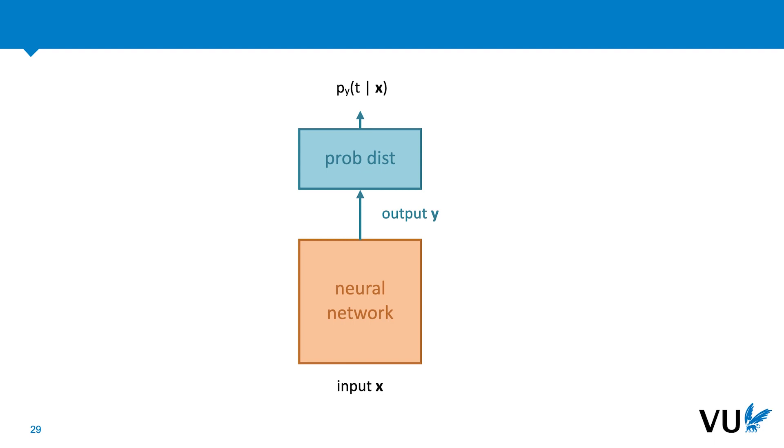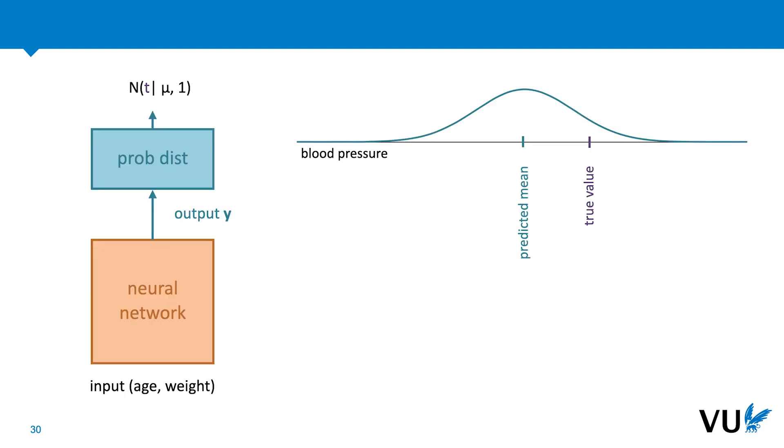To finish up, let's see what happens if we extend this to another distribution, the normal distribution. The normal distribution is a distribution on the number line, so this fits best to a regression problem. We give the network the age and the weight of a person, and our aim is to predict their blood pressure. However, instead of treating the output node as the predicted blood pressure directly, we treat it as the mean of a probability distribution on the space of all possible blood pressures. To keep things simple, we fix the variance to 1 and we predict only the mean. We can also give the neural network two outputs and have it predict both the mean and the variance, but that's something we'll save for later in the course.